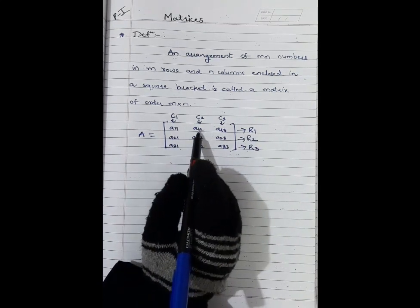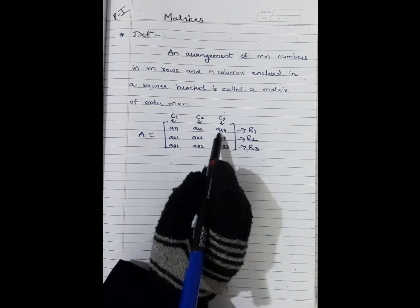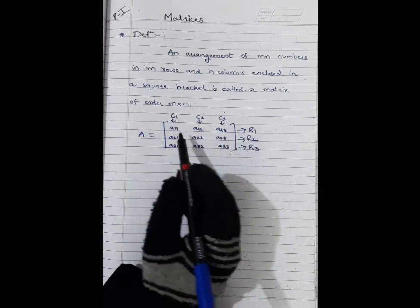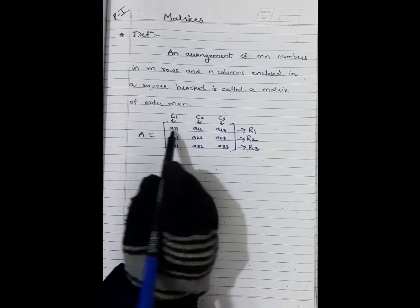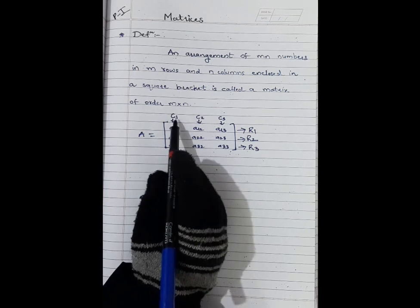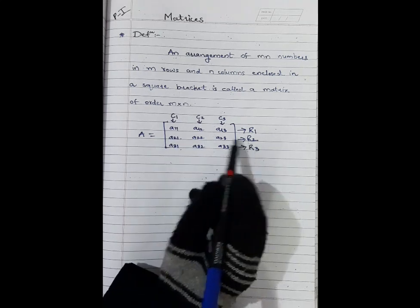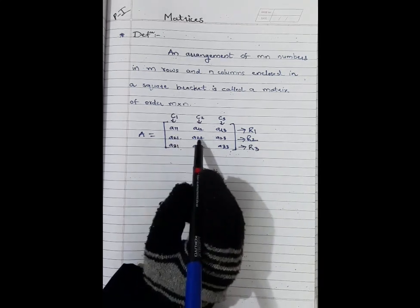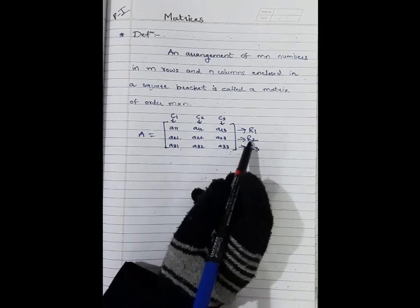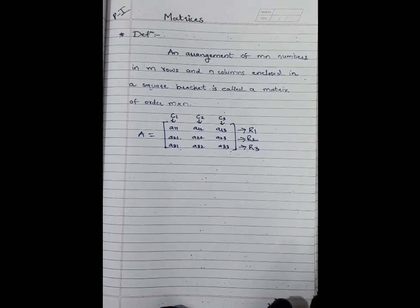Element a₁₂ means it is the element of the first row, second column. a₁₃ means it is the element of the first row, third column. The first subscript shows the row and the second shows the column. Similarly, A₂₁ means element of second row, first column; A₂₂ is element of second row, second column; A₂₃ is element of second row, third column.